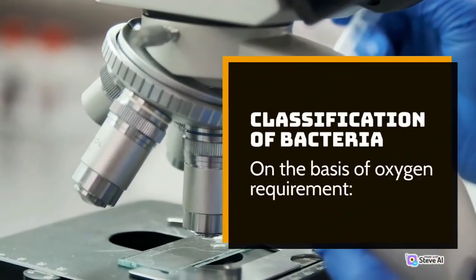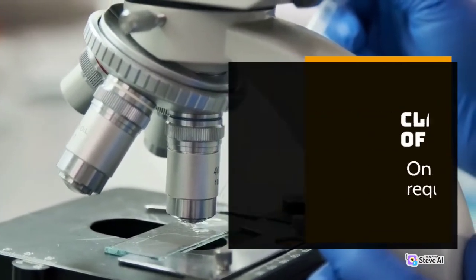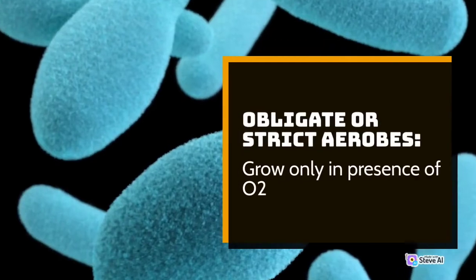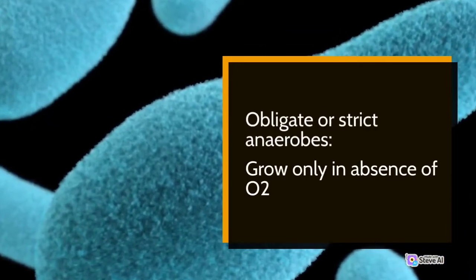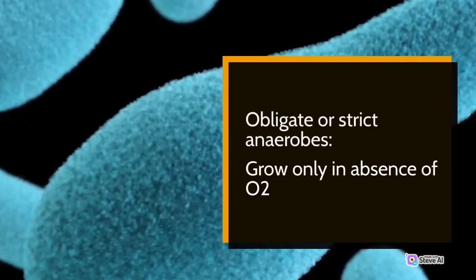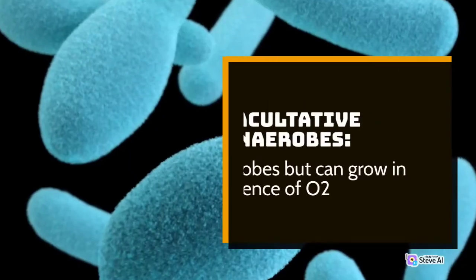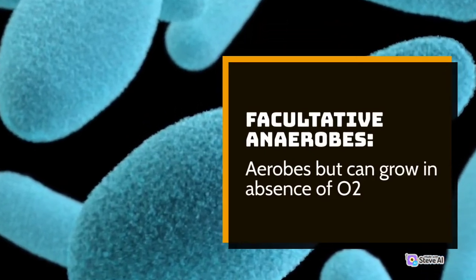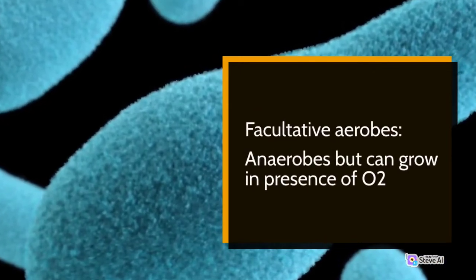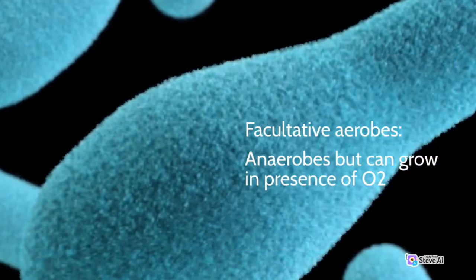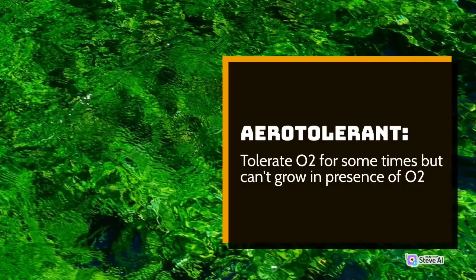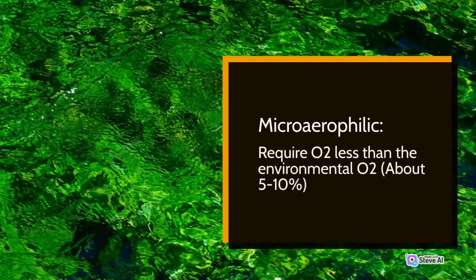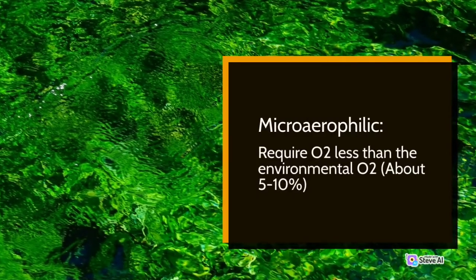Classification of bacteria on the basis of oxygen requirement: Obligate or strict aerobes — grow only in the presence of O2. Obligate or strict anaerobes — grow only in the absence of O2. Facultative anaerobes — aerobes but can grow in the absence of O2. Facultative aerobes — anaerobes but can grow in the presence of O2. Aero-tolerant — tolerate O2 for some time but cannot grow in its presence. Microaerophilic — require O2 at less than environmental levels, about 5–10%.